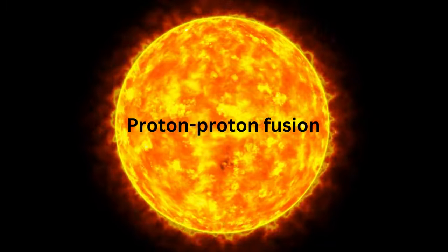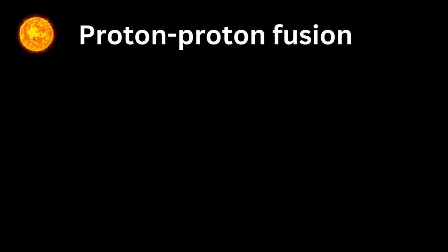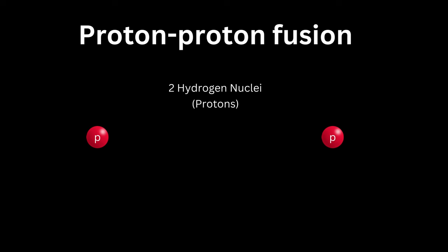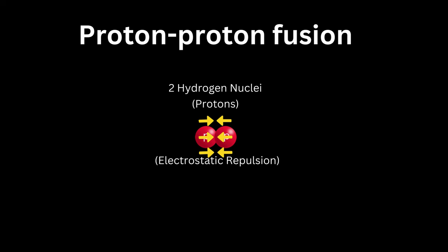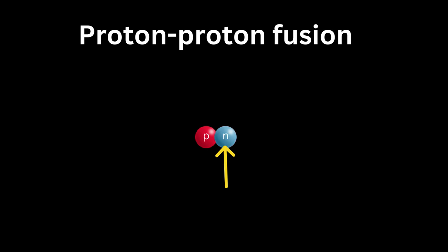One: Proton-proton fusion. In the first step of proton-proton fusion, two hydrogen nuclei or protons collide, thus overcoming the electrostatic repulsion between them. As a result of this occurrence, a proton changes into a neutron by a process known as beta plus decay, emitting a positron and a neutrino in the process.